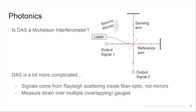The photonics of DAS can be thought of as a Michelson interferometer — a standard tool from high school physics that measures changes in a sensing arm with a single coherent laser pulse. If the sensing arm is the same length as the reference arm, phase is maintained. But if the sensing arm is moved, perhaps by a seismic wave, we detect that length change through an interference pattern. DAS is more complicated: signals come from Rayleigh scattering inside the fiber rather than mirror reflections, and we measure strain — the change in length — over multiple overlapping gauge lengths of fiber, using time tracking of laser pulses from the interrogator.